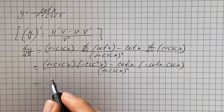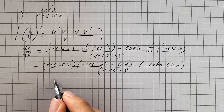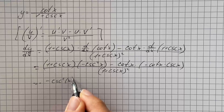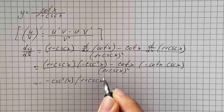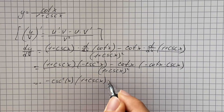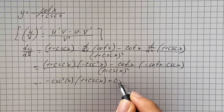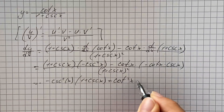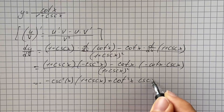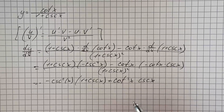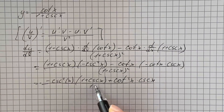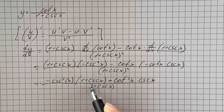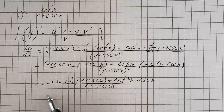Therefore the final answer is going to be: negative cosecant squared of x times one plus cosecant of x, plus cotangent squared of x times cosecant of x, all over one plus cosecant of x squared. And that's going to be our answer.